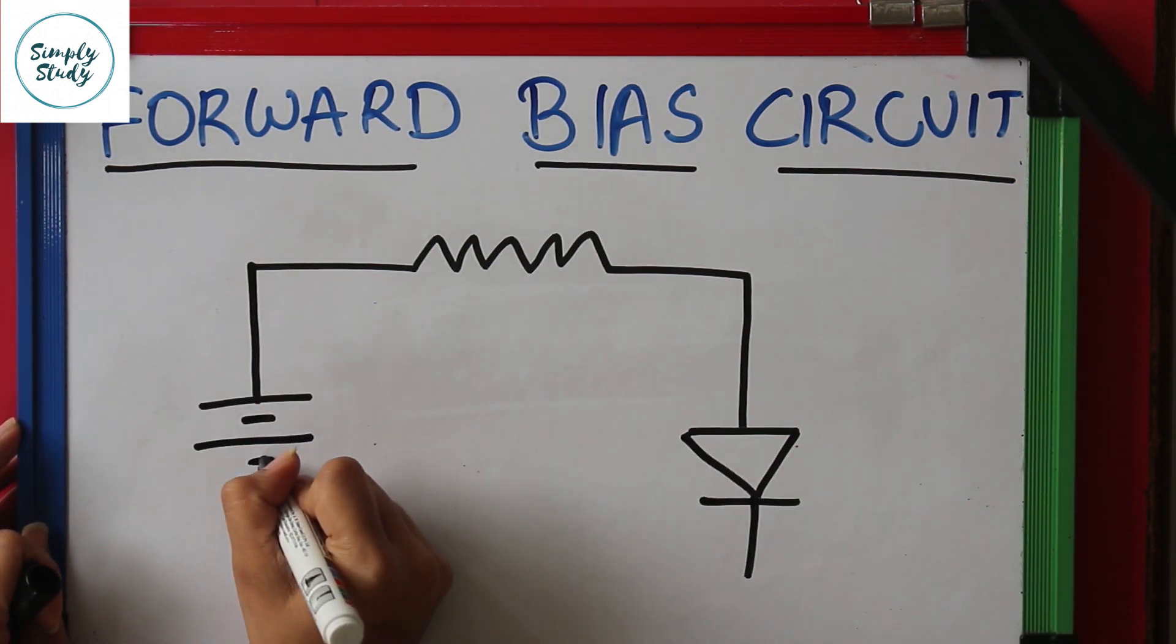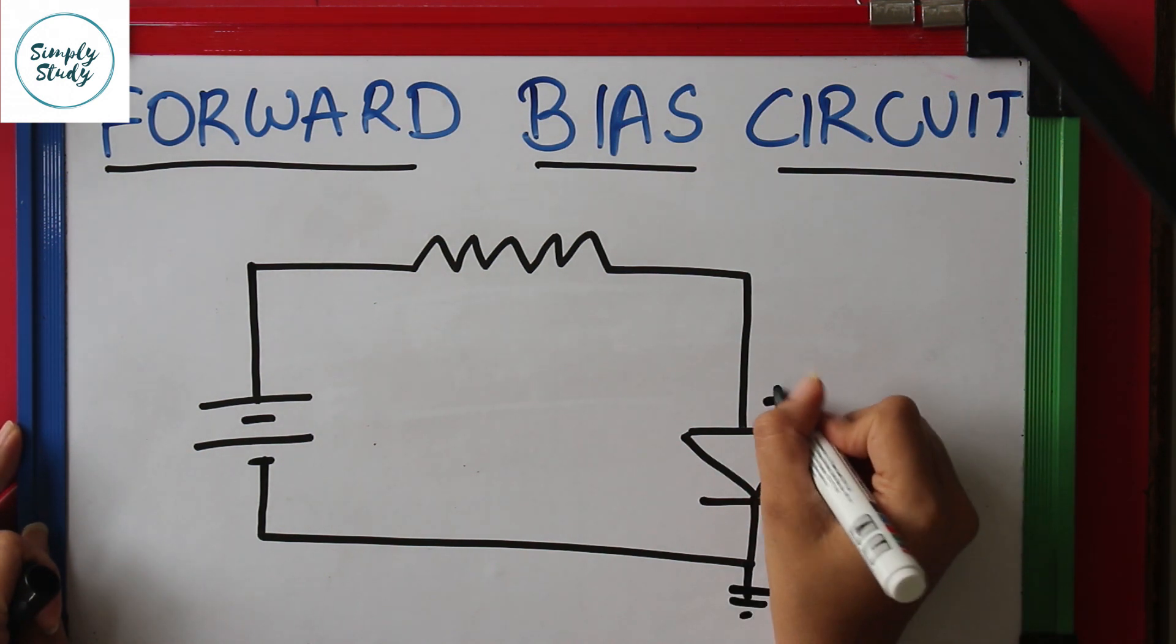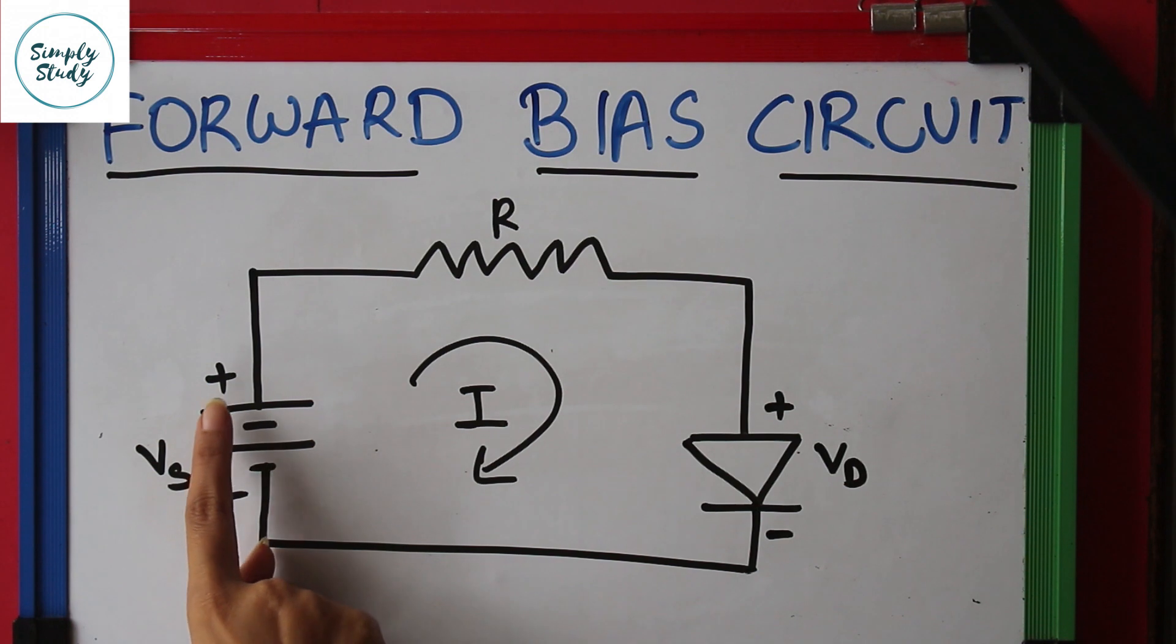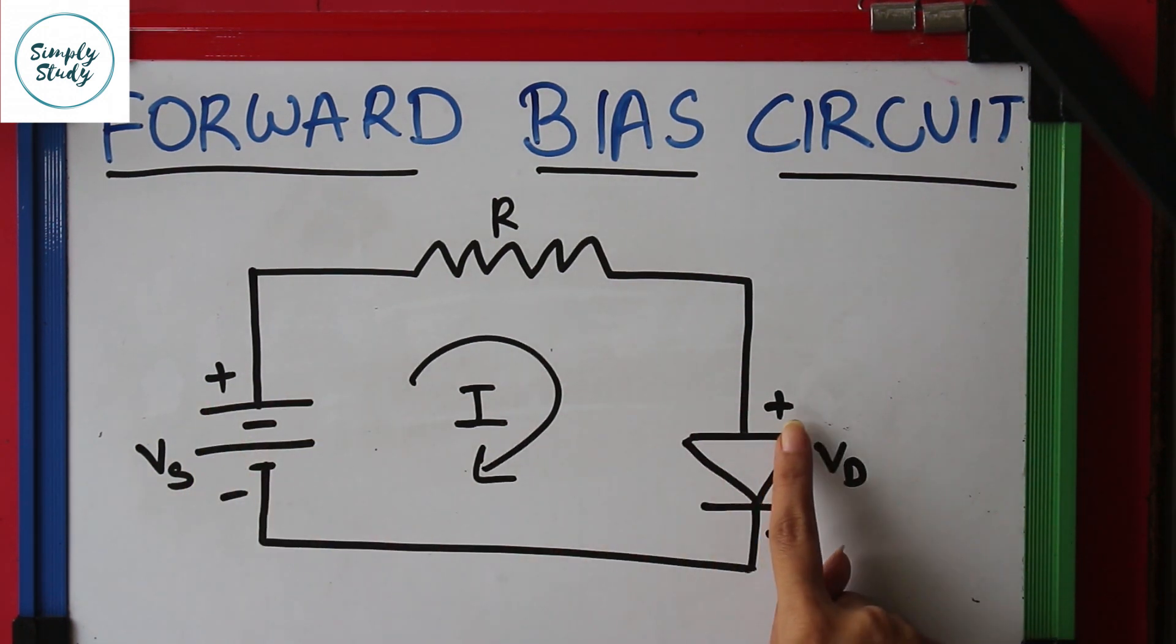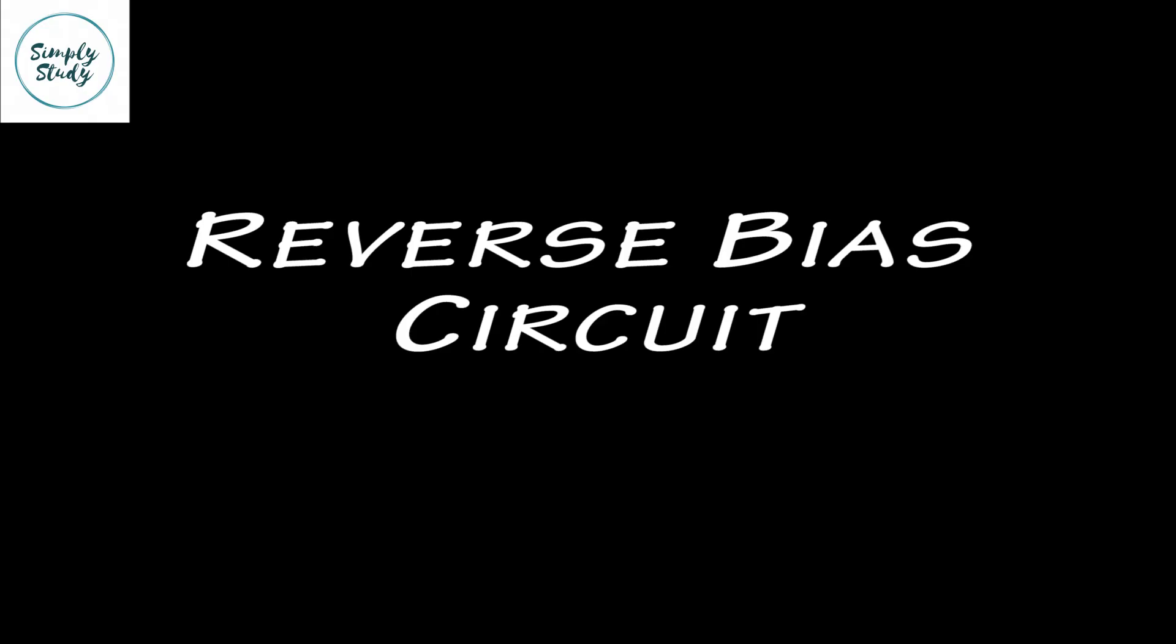In this circuit the diode is forward biased. How do we know that? The answer is because the positive terminal of the battery is connected through a resistor to the P side of the diode, and the negative terminal of the battery is connected to the N side of the diode.